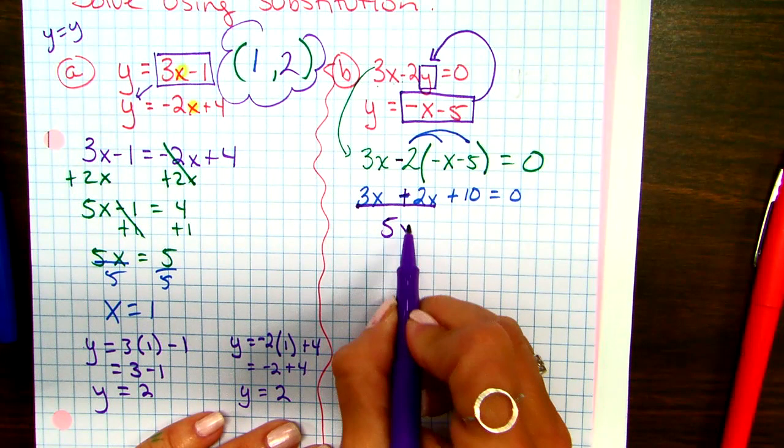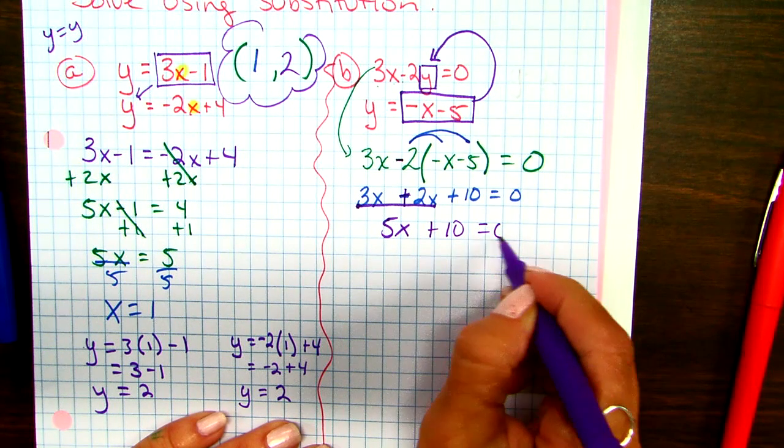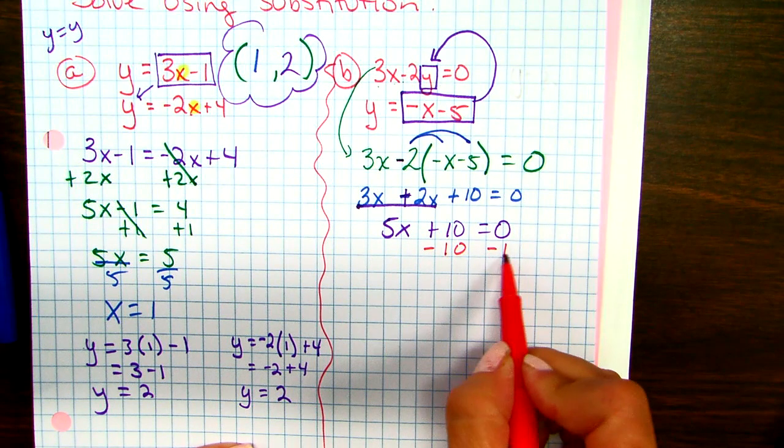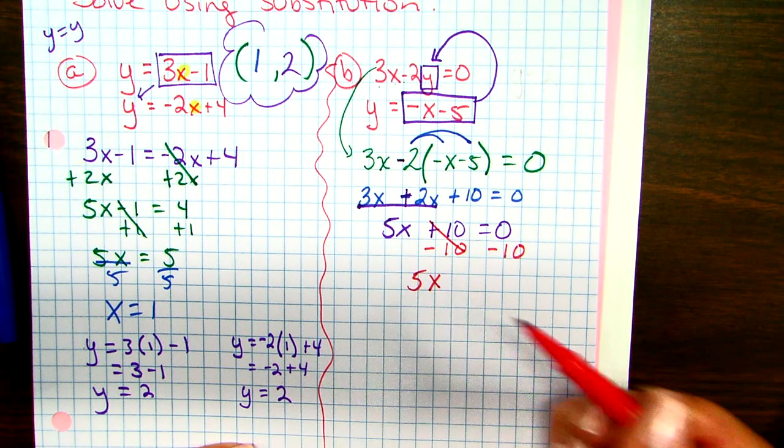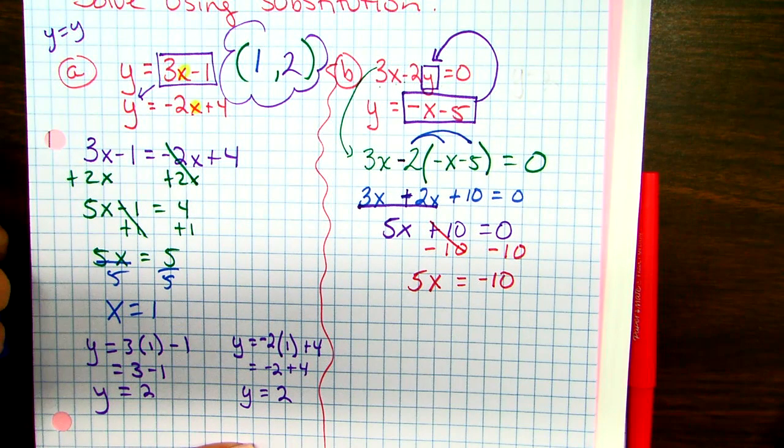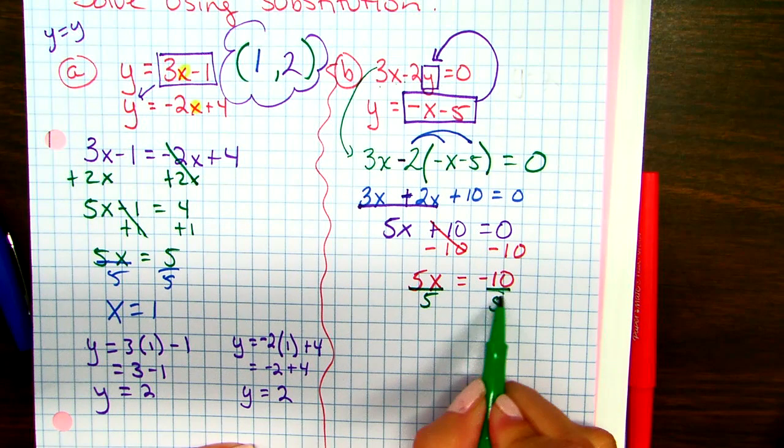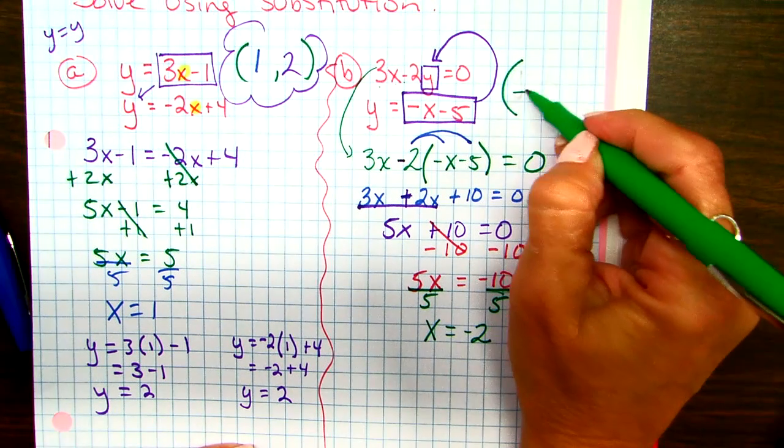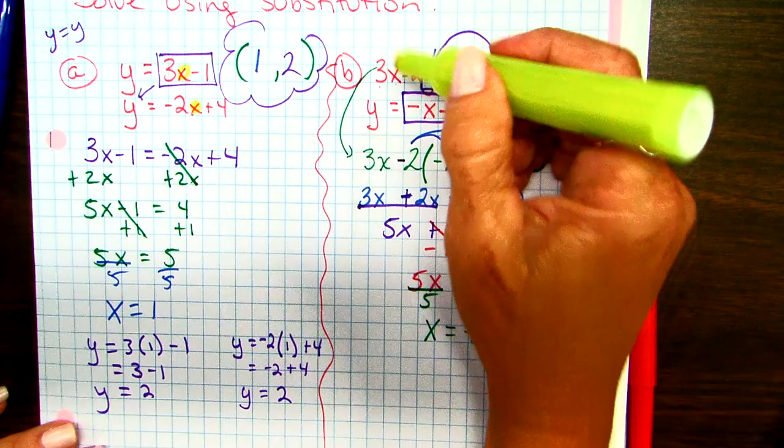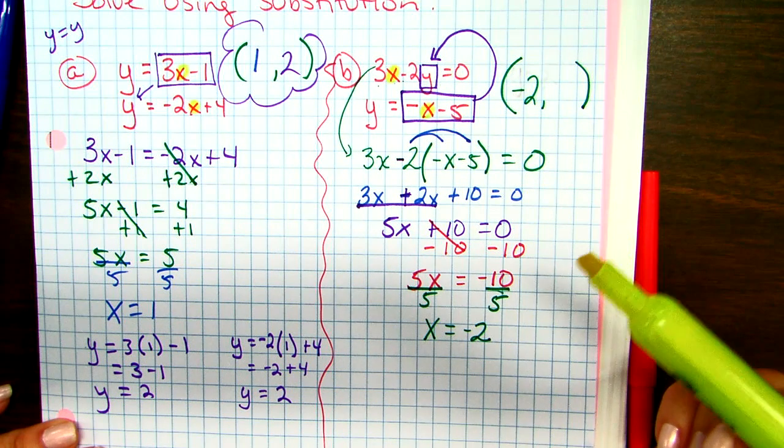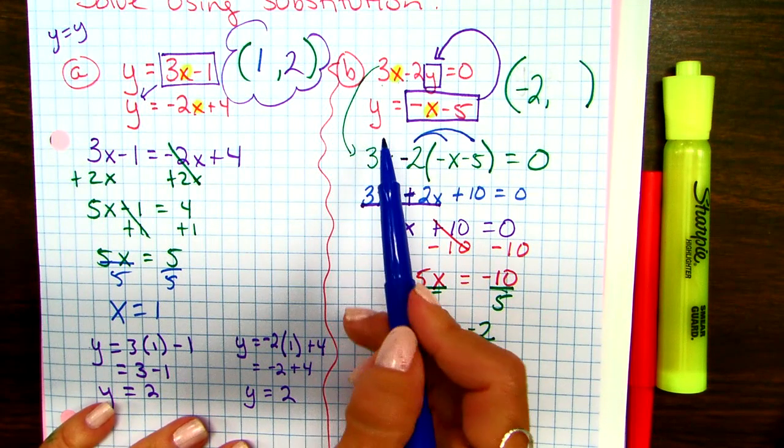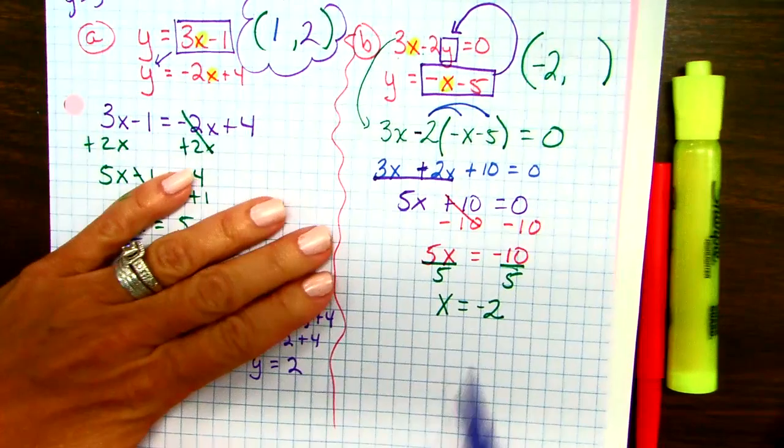They're on the same side, so we just combine them. That's 3x plus 2x is 5x plus 10 equals 0. Keep on going. I need to get x by itself, so I'm going to subtract 10 from both sides. 5x equals negative 10. Divide by 5. x equals negative 2. So negative 2 is half of my ordered pair. I just need y. You can plug into either one, guys. You can plug into this equation or this equation. Which one is easier, the first or the second? The second one, because y is already by itself. But if you like the first one better, go for it. It doesn't matter.